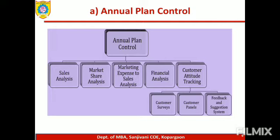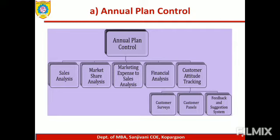Moving ahead with customer attitude tracking, there are various methods. Companies get questionnaires filled from the market, analyze those surveys, and get data on whether control has been done properly. Under customer panels, customers are hired to review products, advertisements, and other marketing activities, helping management understand consumer perception and attitude. The feedback and suggestion system allows market performance to be analyzed with genuine customer feedback and improved through inputs and suggestions from the market.